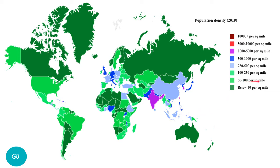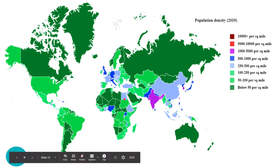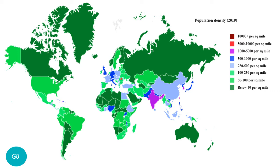The next range is 50 to 100 and then 100 to 250 people per square mile, which includes the United States, Alaska, Brazil, and some countries in Africa and parts of Europe. The light blue color represents 200 to 500 people per square mile, which includes China, Indonesia, Malaysia, and some parts of Europe such as Italy, Sweden, and Denmark.